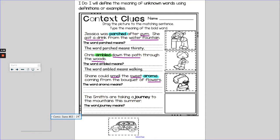So all of those context clues help me figure out that this word aroma means the smell. So if I fill it in, Shane could smell the sweet scent coming from the bouquet of flowers. Oops a daisy, I clicked the caps lock. The word aroma means scent or smell.